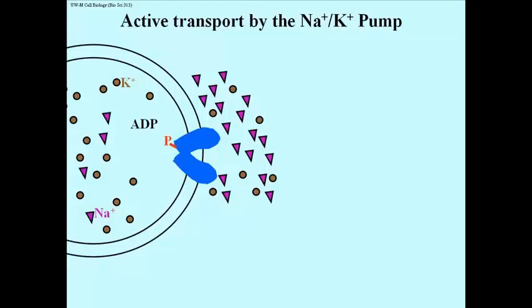You'll notice that in the expulsion of the sodium ions, the pump has again changed conformation, and it actually has exposed some surfaces to the outside of the cell which recognize not three, but two potassium ions.